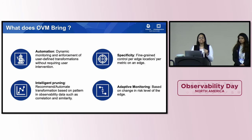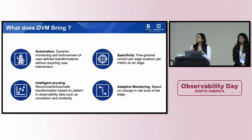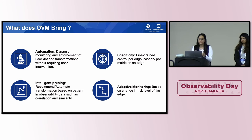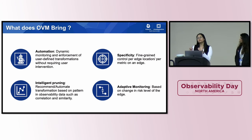What does OVM bring in? It brings in automation — it supports dynamic transformations on your metric data. By transformations, I mean filtering of your metrics, reducing the frequency, increasing the frequency, as well as user-defined transformations. It is kind of a plug-and-play where you can define your own transformations on your metrics. All this can happen without user intervention — once the user defines transformations and conditions for them to be applied, it all happens automatically when those conditions are triggered.